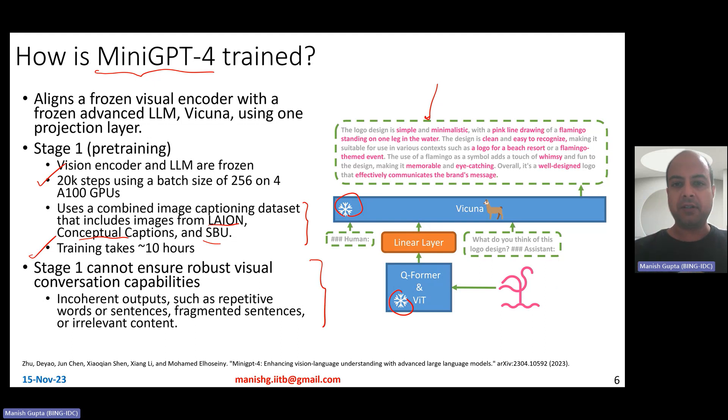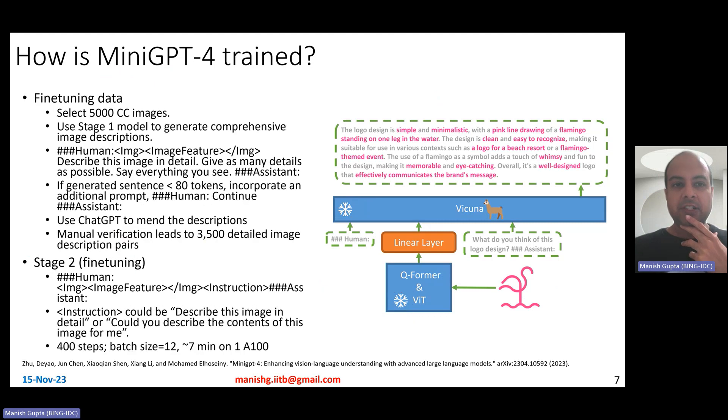You know, for chatbots, it's not good. And why is it not good? Well, it produces incoherent outputs like repetitive words, sentences, fragmented sentences, irrelevant content, and so on. So therefore, what they do is to fine-tune this model in a conversational way, instruction fine-tuning, as you may say.